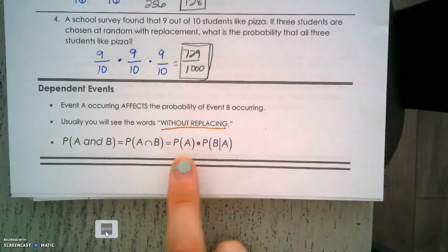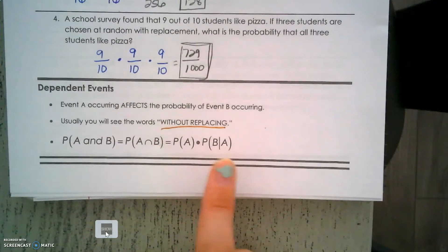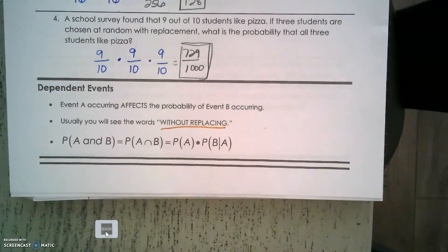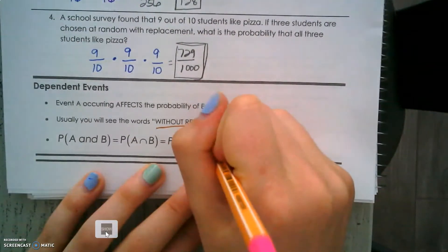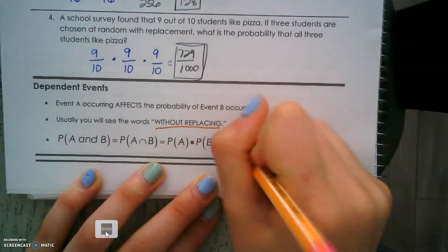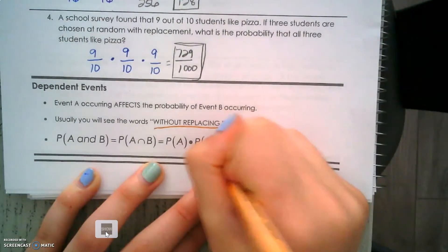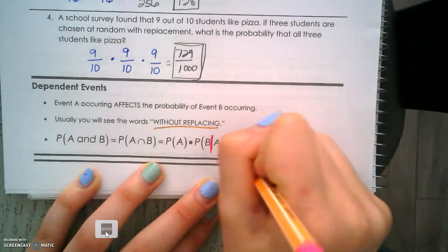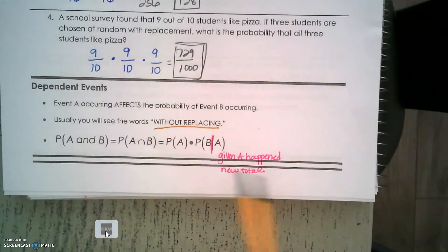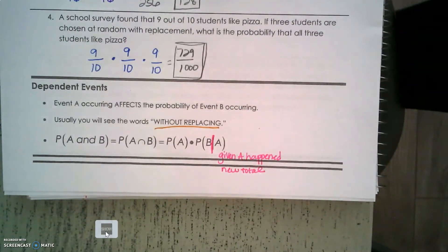When we work on it, we're going to work on this conditional probability. This line means 'given A happened', and that's going to be your new total. Given A happened, we're going to use that as our new total in our denominator. Let's continue on and look at some more examples.